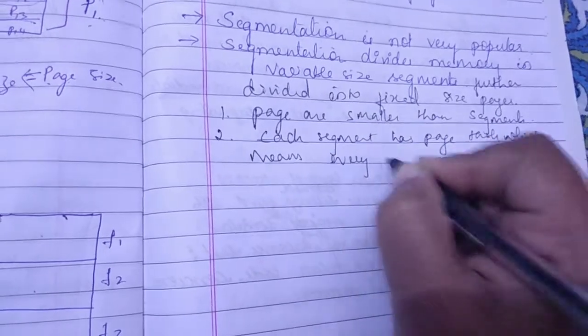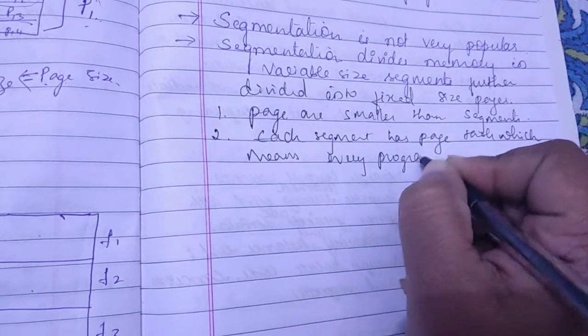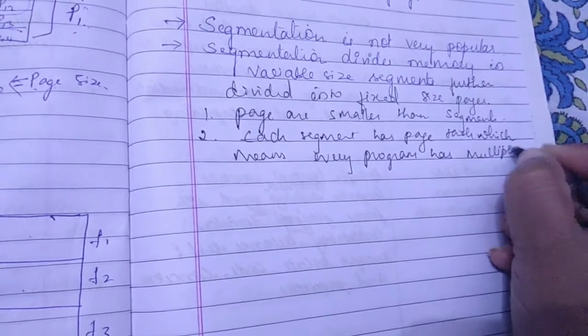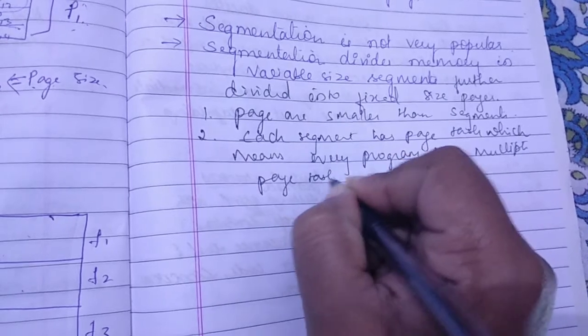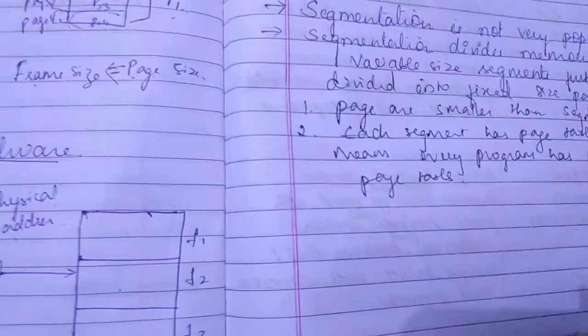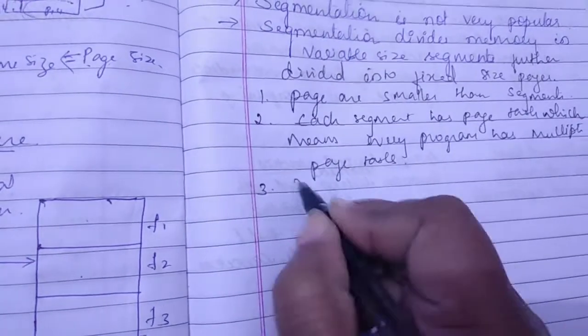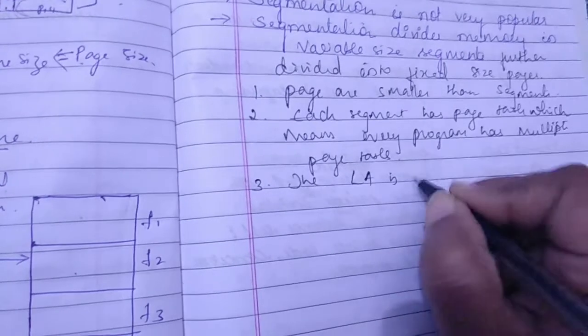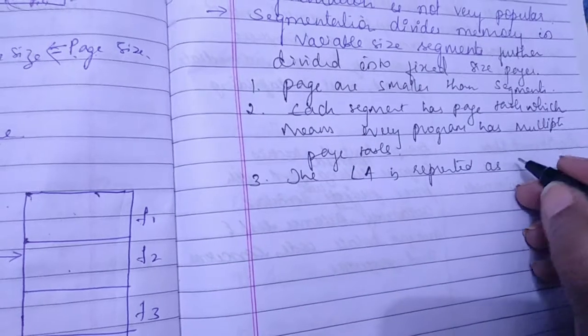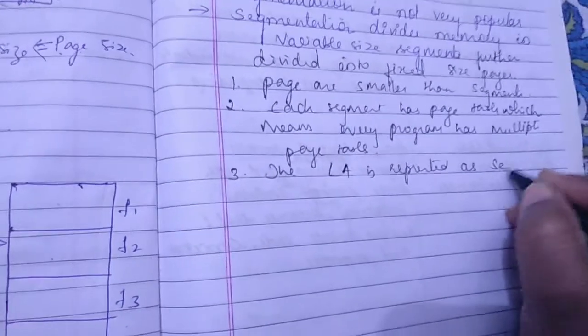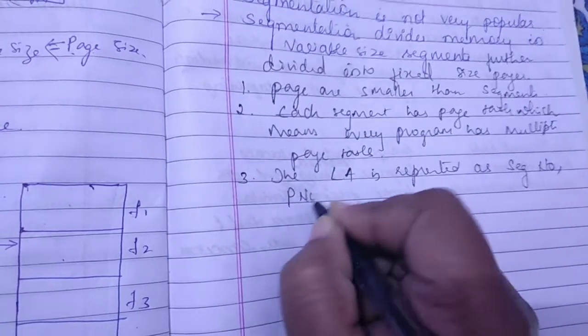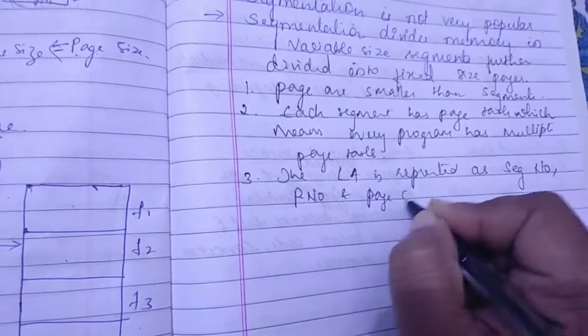Which means every program has multiple page tables. And the logical address is represented as segment number, page number, and page offset.